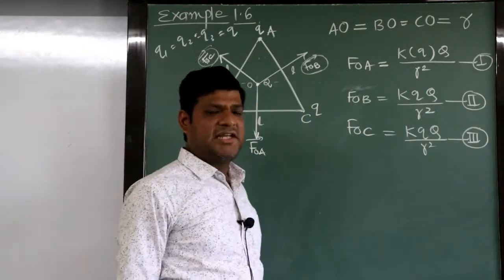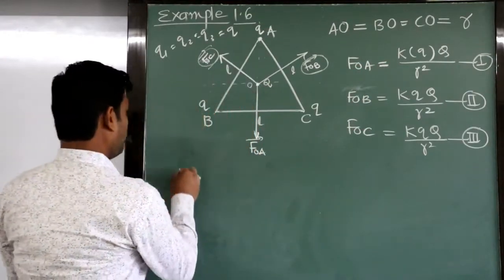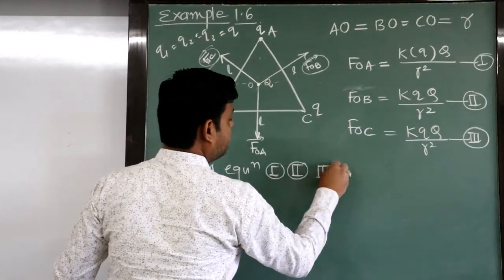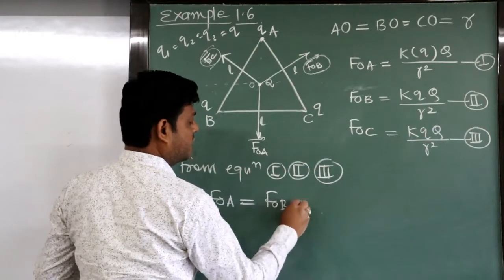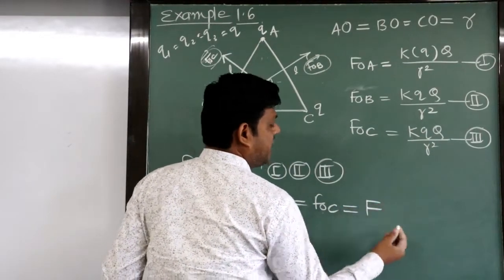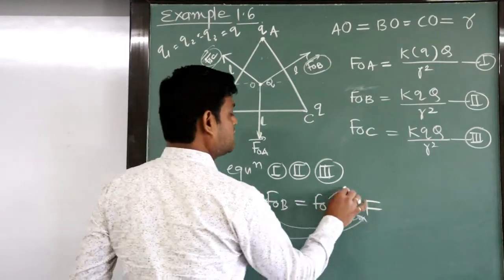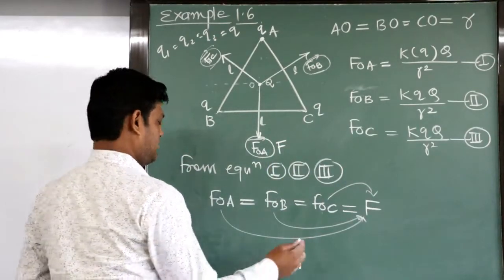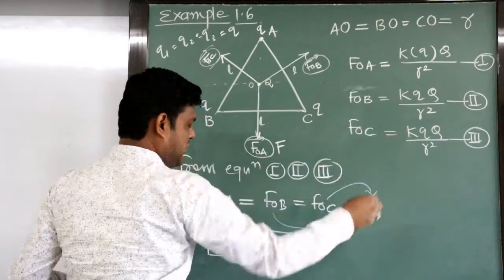What are we observing? Equations 1, 2, and 3 are all the same. Therefore, from equations 1, 2, and 3, the force acting on O due to A, force acting on O due to B, and force acting on O due to C are all equal. So we write FOA = F, FOB = F, and FOC = F — equation 4.